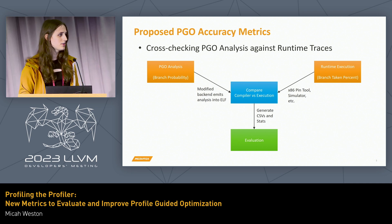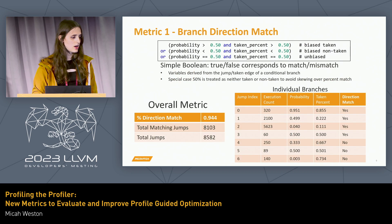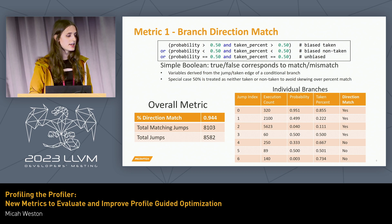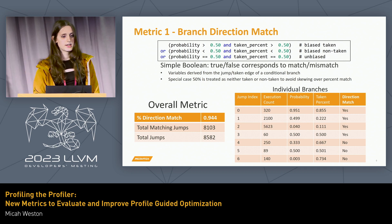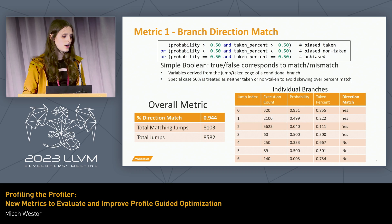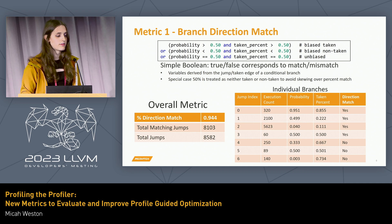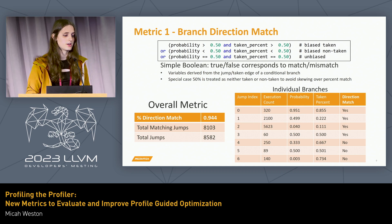That comes together to generate those metrics and provide us the information we're evaluating. The first one is the notion of branch direction match. This is the idea that if something is taken more often in execution, you would hope that the compiler predicts the probability as higher, and vice versa. This value is based on the jumping edge of a conditional branch. There's a special case of what to do about 50% — we found that to avoid skewing the final overall metrics, it's better to just treat it as exact, as leaning it one way or the other tends to bias things.